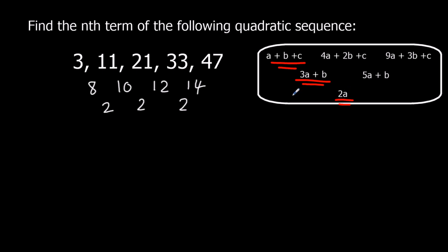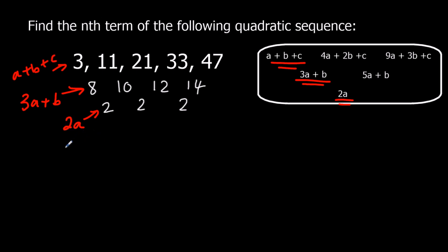So 2a equals 2, that means a equals 1. Then 3a plus b equals 8 — our first difference. And a plus b plus c equals 3, which is the first term. So we set up these equations and solve for a, b, and c. Since 2a equals 2, a must be 1.